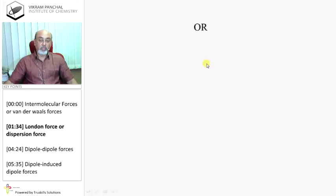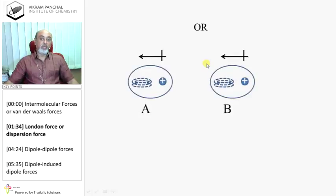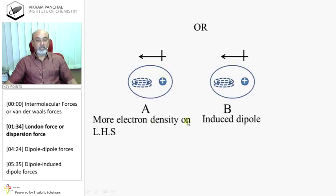So, this way, both non-polar become polar, but they are induced, and it can be the other way also, where on atom A, there is more electron density on the left-hand side. Therefore, induced dipole will be of B in this direction.